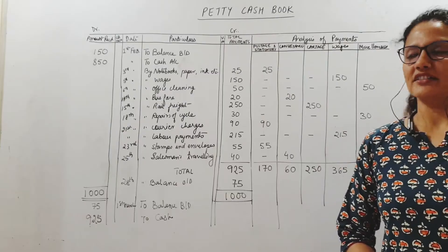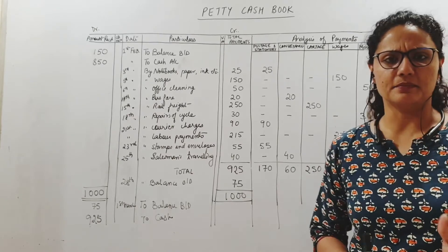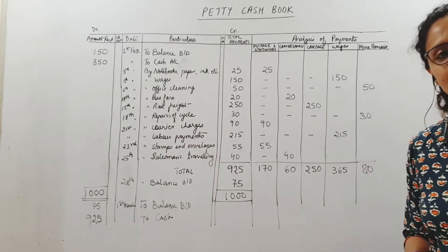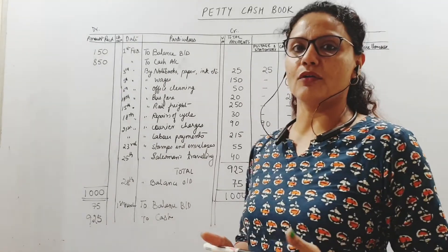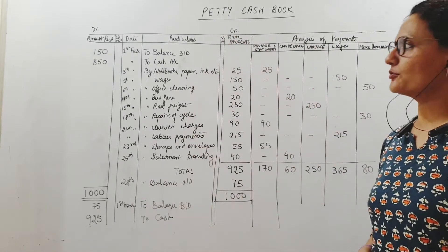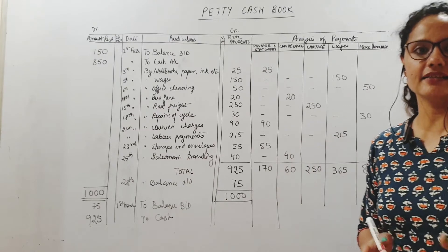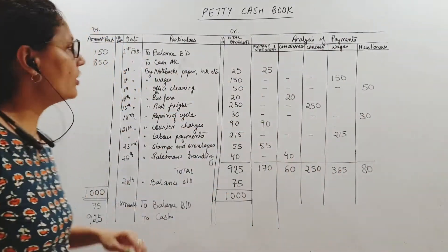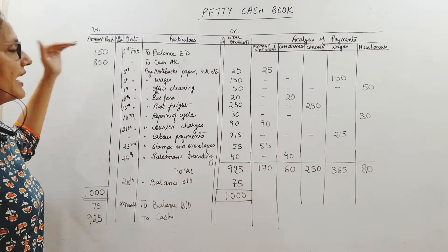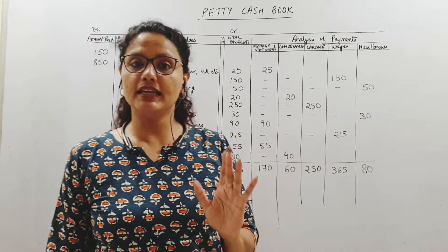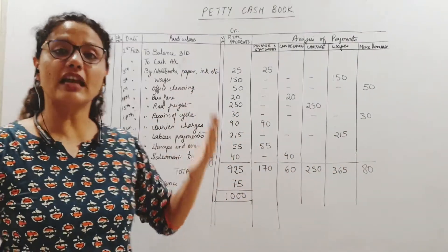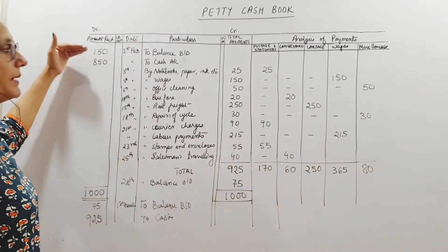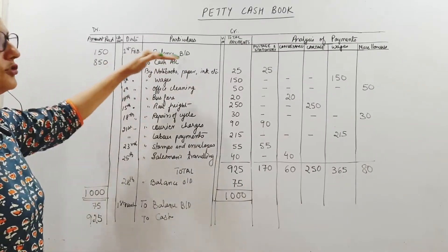Let us take a sum. On 1st of February there was a balance of 150 with the petty cashier — he already has 150 from the previous period, perhaps January. So he starts the month of February with 150, which is the balance brought down written on the debit side, as this is a carry-forward from the previous month — as good as received.